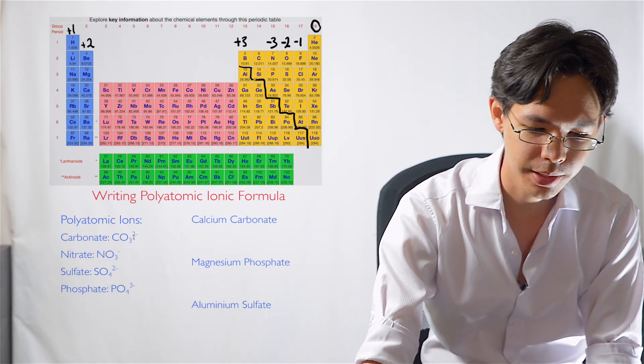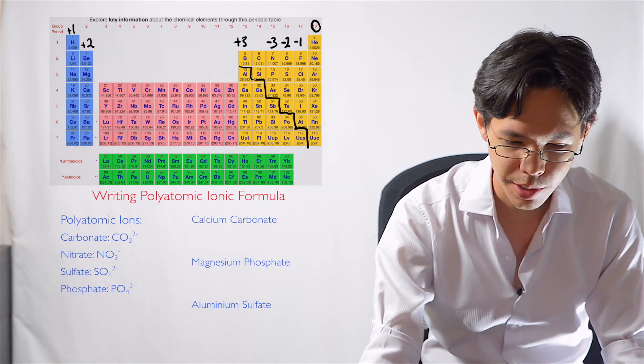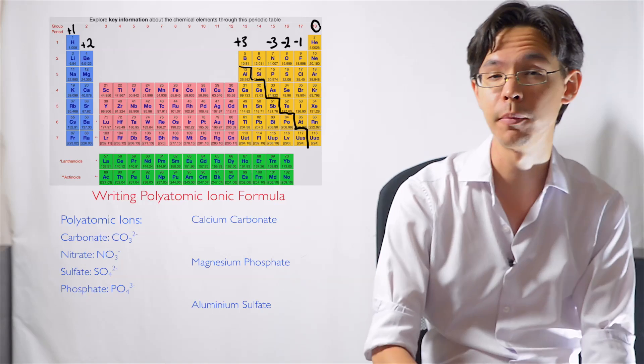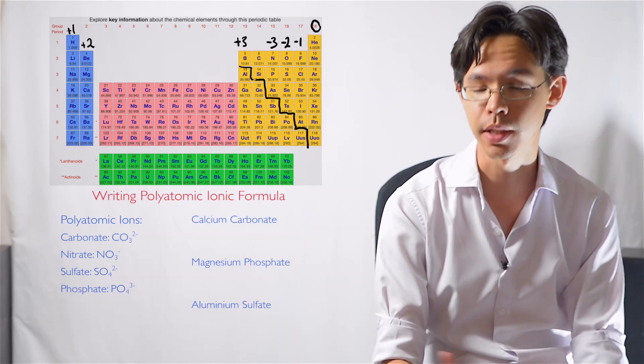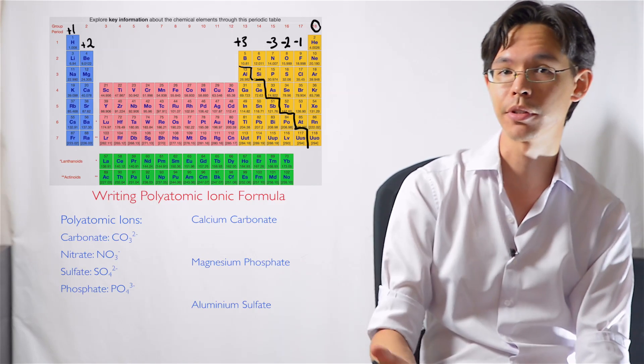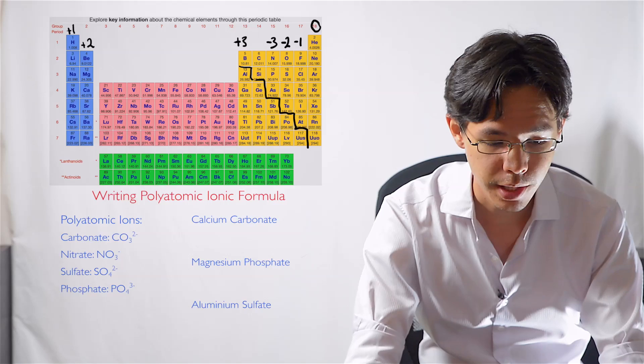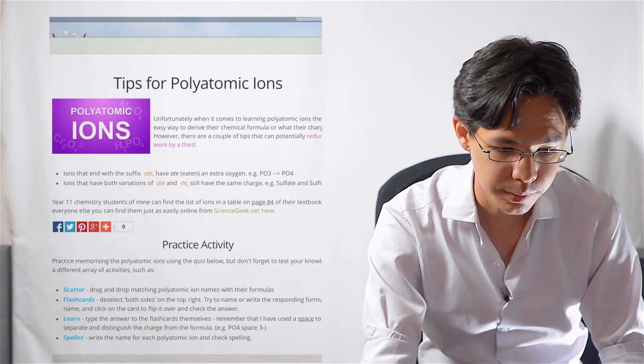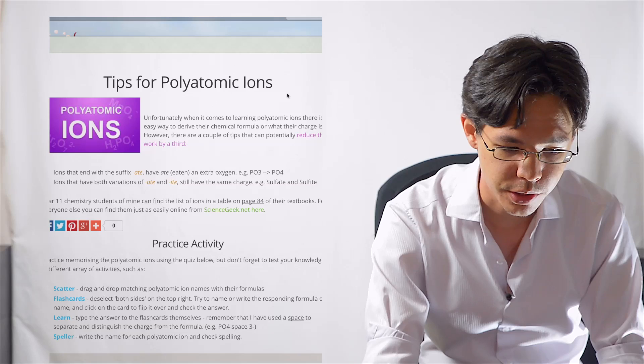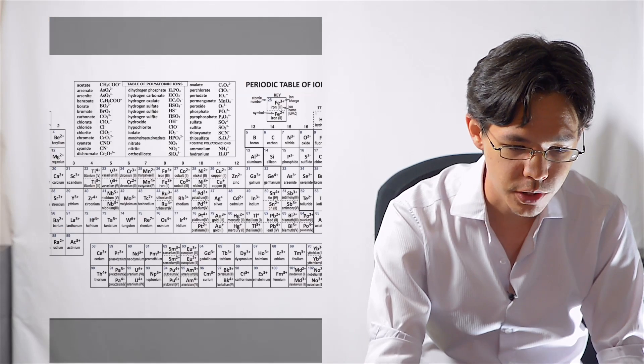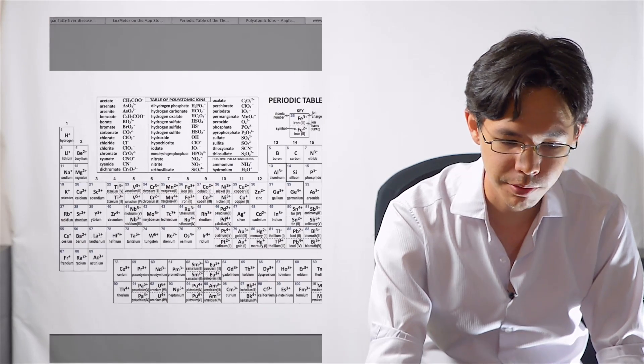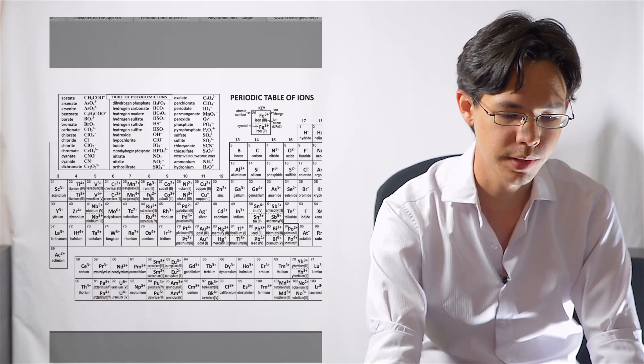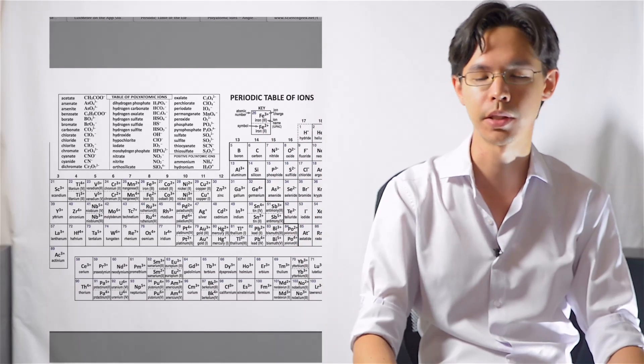I've got a list here on my computer which shows you some of the more common polyatomic ions that you're likely to encounter. However, if you want to see more of a complete list, you can visit my website, which has a link over here to ScienceGeek, which has a lot more detail on some of the variety of polyatomic ions.